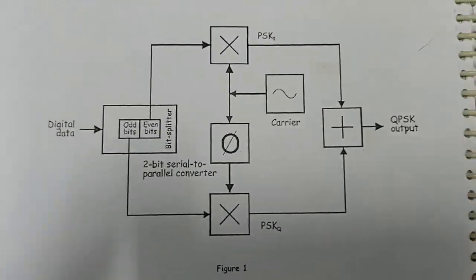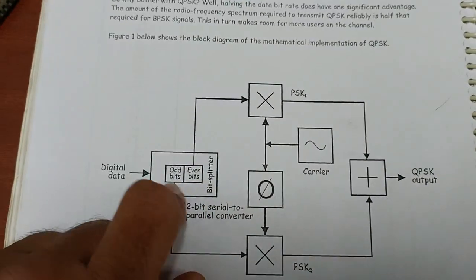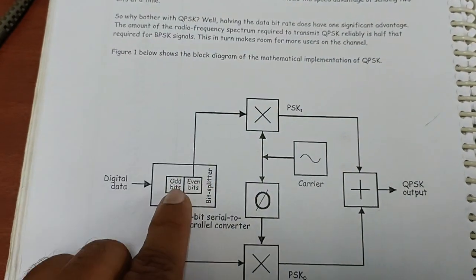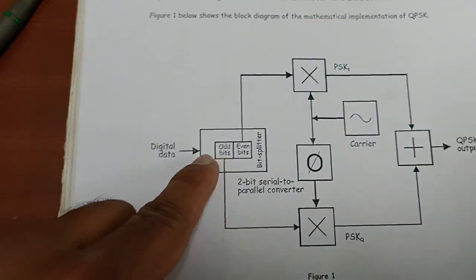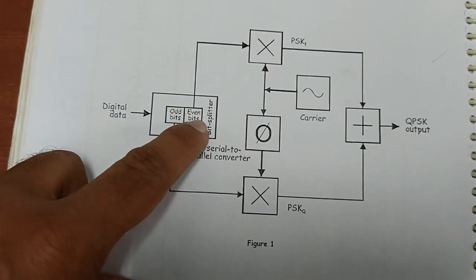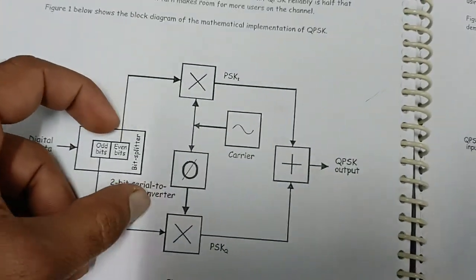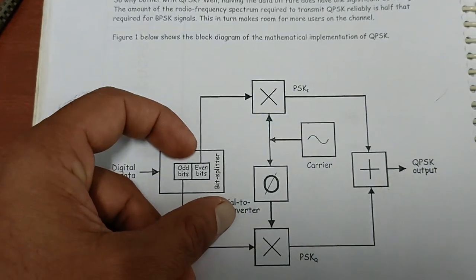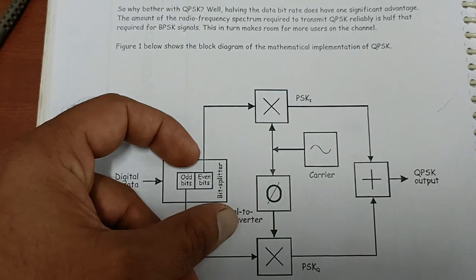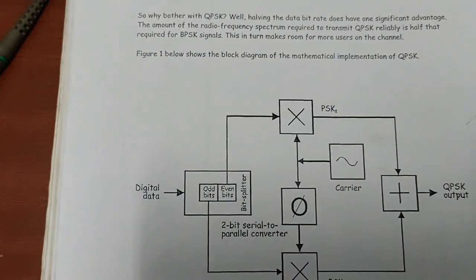Let's look at the block diagram. There is digital data coming in serial mode — 1, 0, 0, 1 — as serial digital bits. We divide it into odd bits and even bits, selecting 2 bits at a time, because QPSK is a basic extension of BPSK. In BPSK we send a single bit at a time, but in QPSK we send 2 bits at a time.